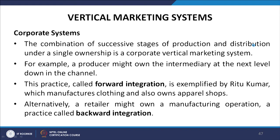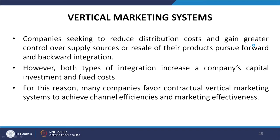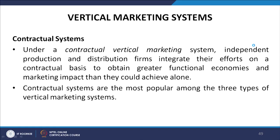Forward integration occurs when a producer owns the intermediary at the next level down in the channel — exemplified by Ritu Kumar, which manufactures clothes and also owns apparel shops. Alternatively, backward integration occurs when a retailer owns a manufacturing operation. Companies pursuing these approaches seek to reduce distribution costs and gain greater control. However, both types increase capital investment and fixed costs, so many companies favor contractual vertical marketing systems. Under a contractual system, independent production and distribution firms integrate their efforts on a contractual basis to obtain greater functional economies and marketing impact than they could achieve alone.